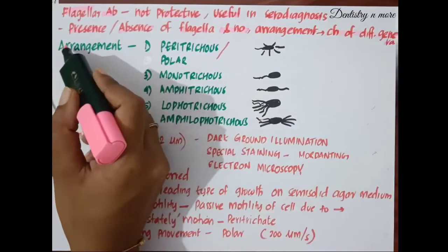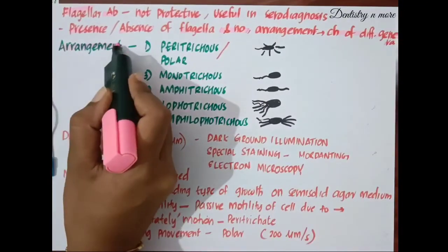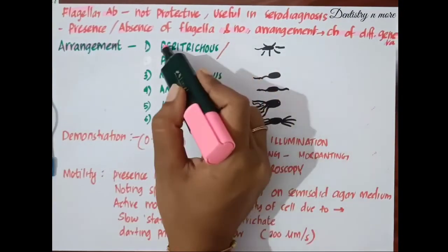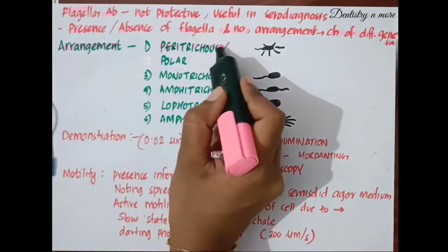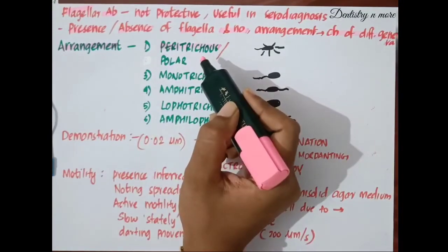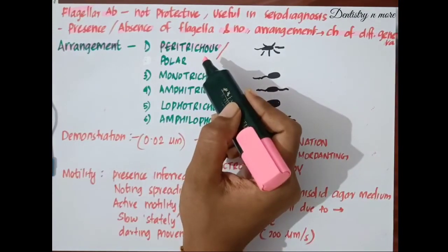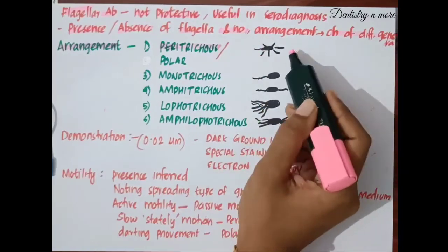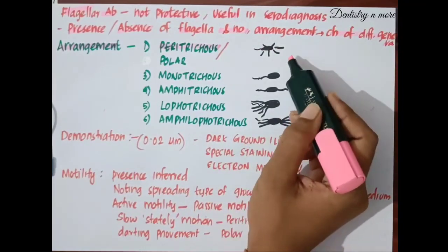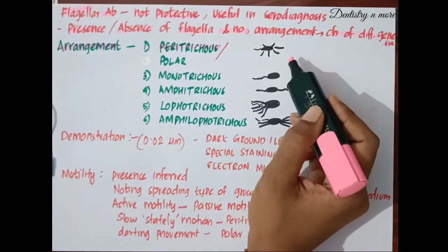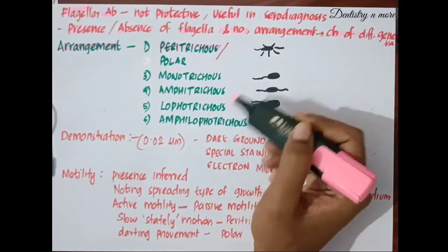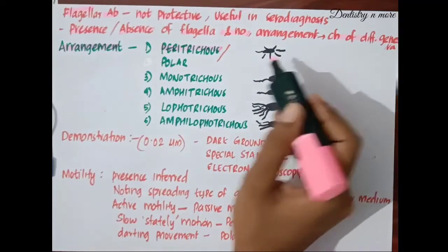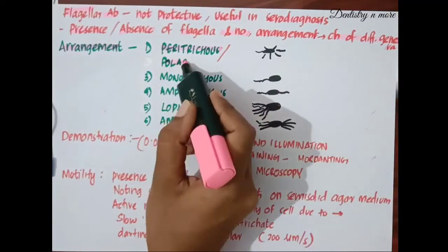Flagella are arranged in various ways. The first arrangement is peritrichous, where the flagella may be arranged all around the cell — for example, in typhoid bacillus. Sometimes they may be situated at one or both ends of the cell, which is the polar type.